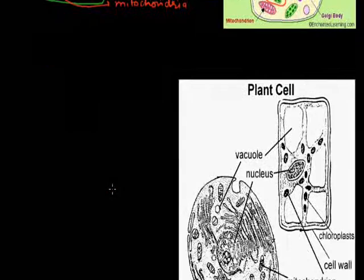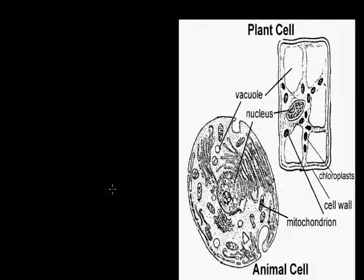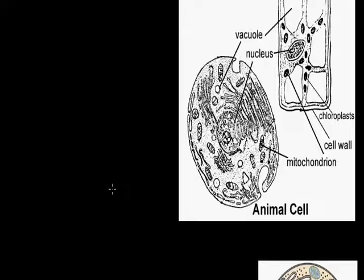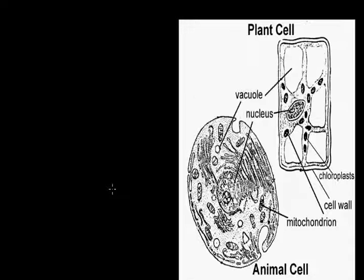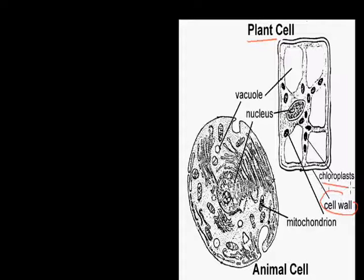Now we discuss the comparison between the plant cell and the animal cell. Looking at the two diagrams, the plant cell has an outermost layer called the cell wall, it has chloroplasts, and it has large vacuoles. These are the main unique features of the plant cell.